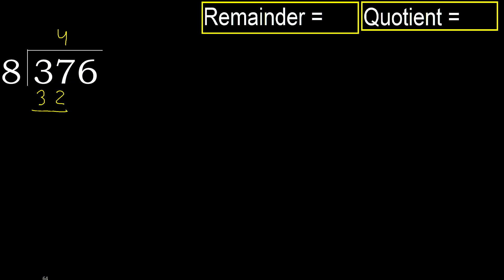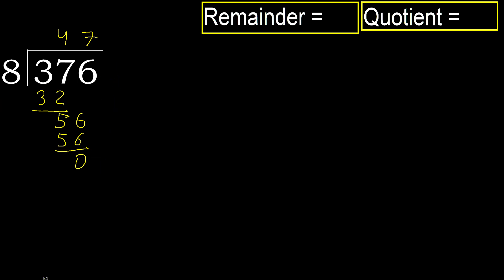Subtract: 37 minus 32 is 5. Next: 56. 8 multiplied by 7 is 56, which is not greater. Subtract. Next digit is not remaining, therefore finish.